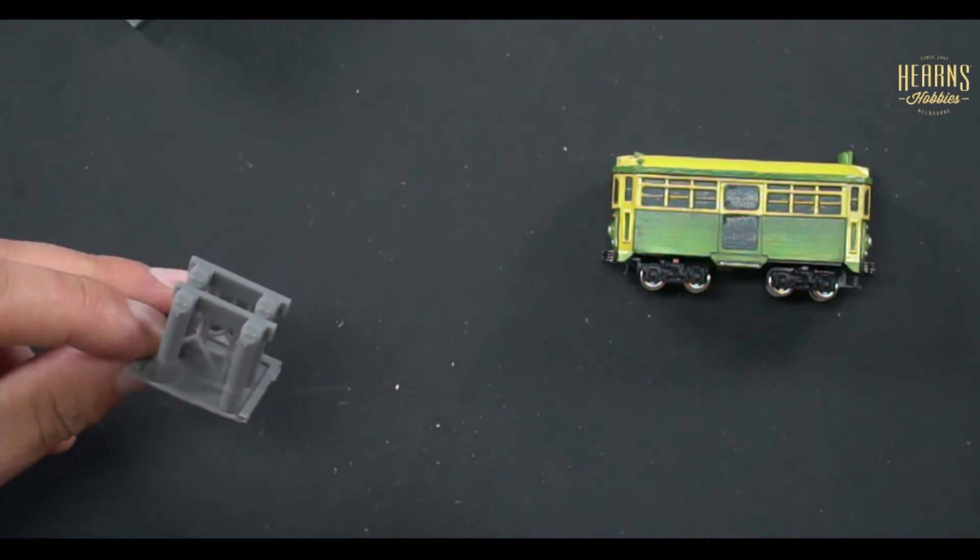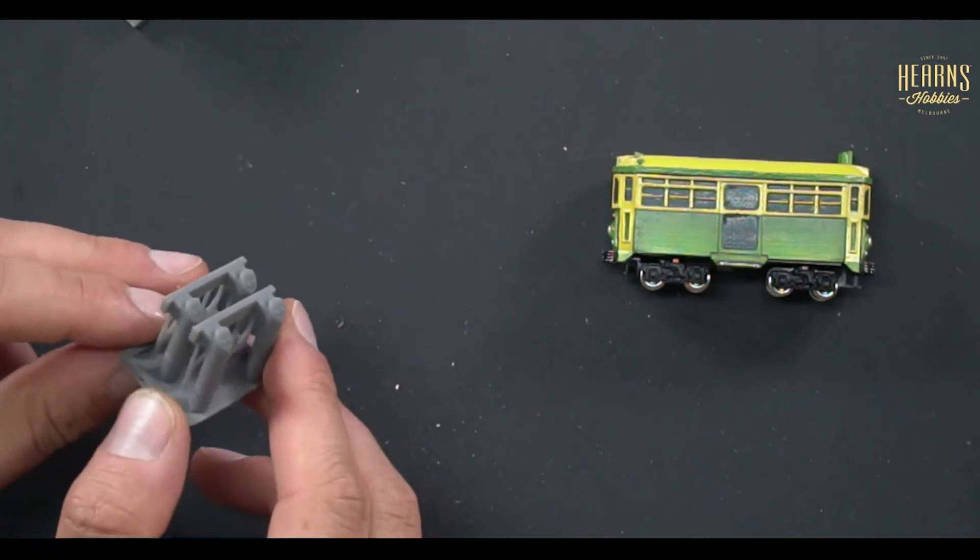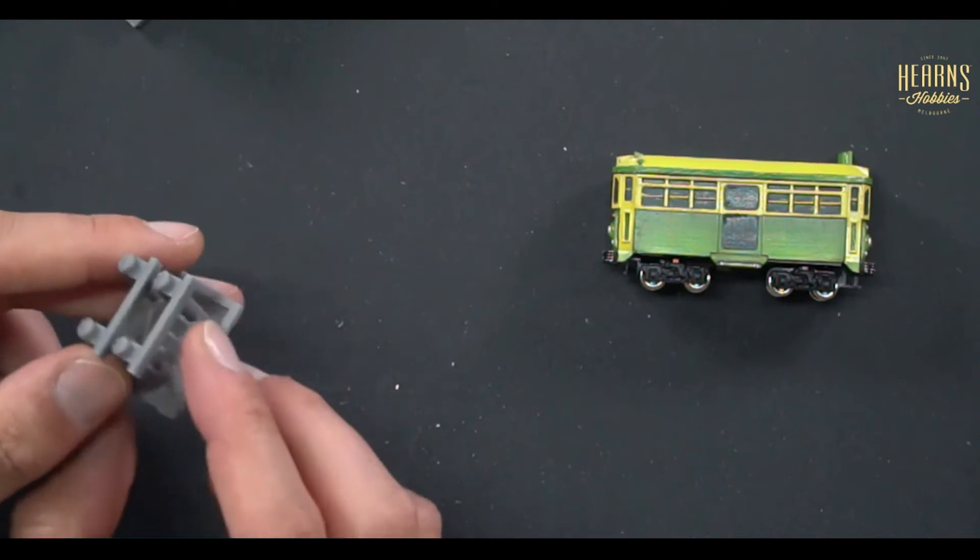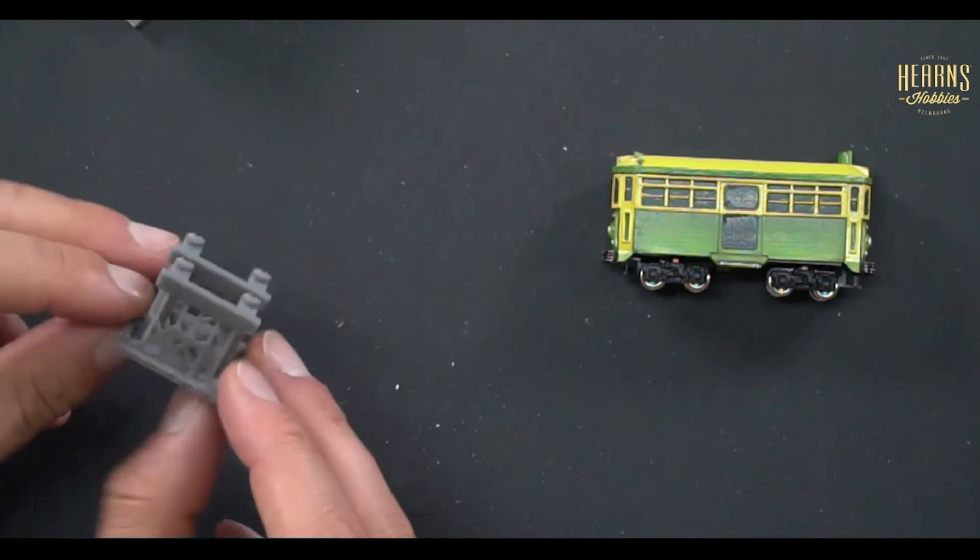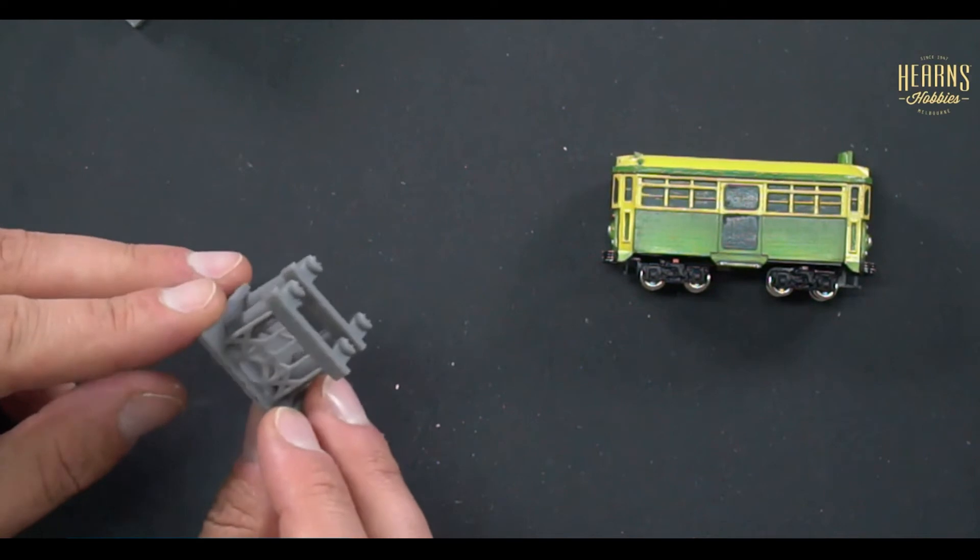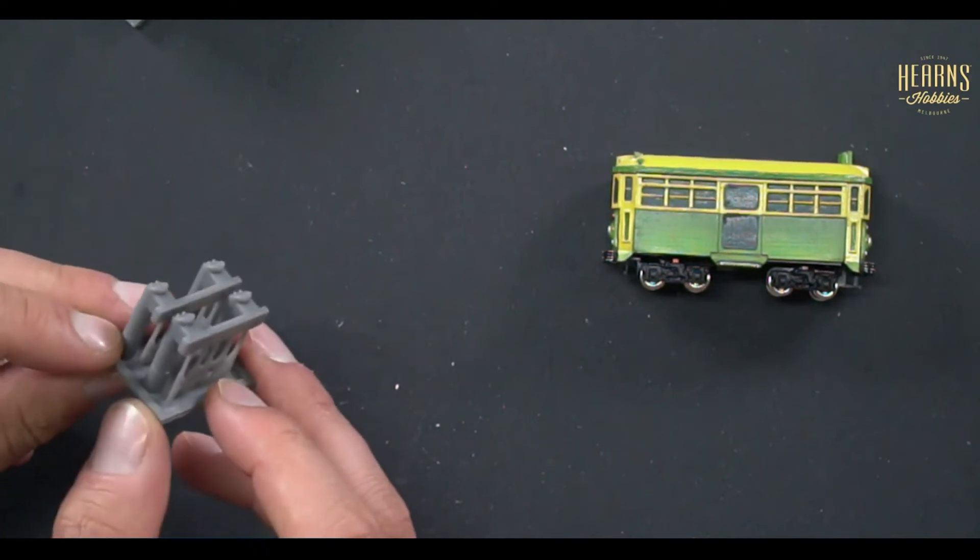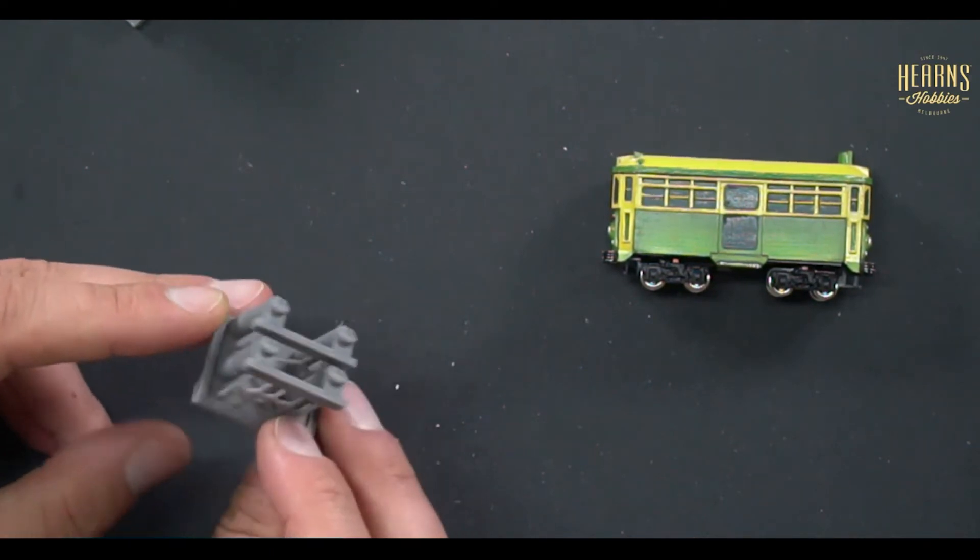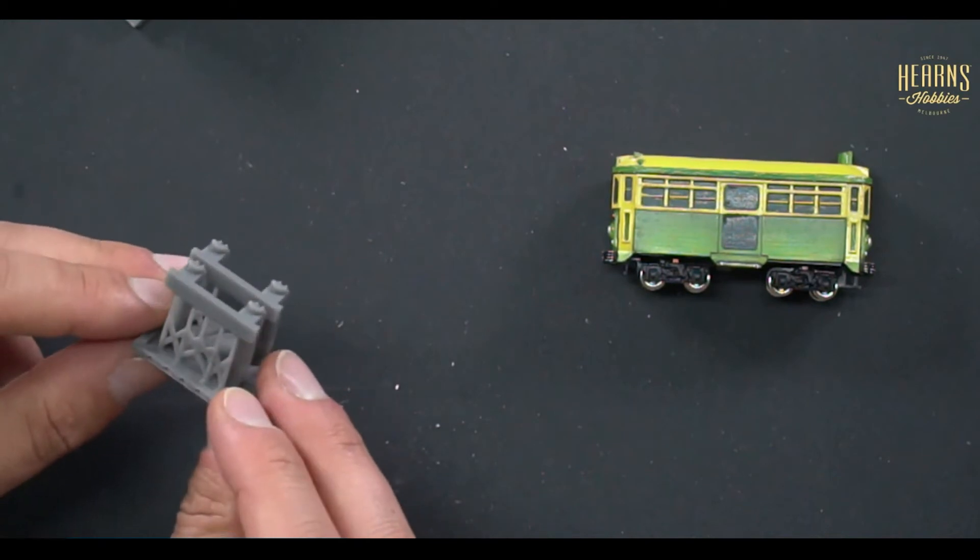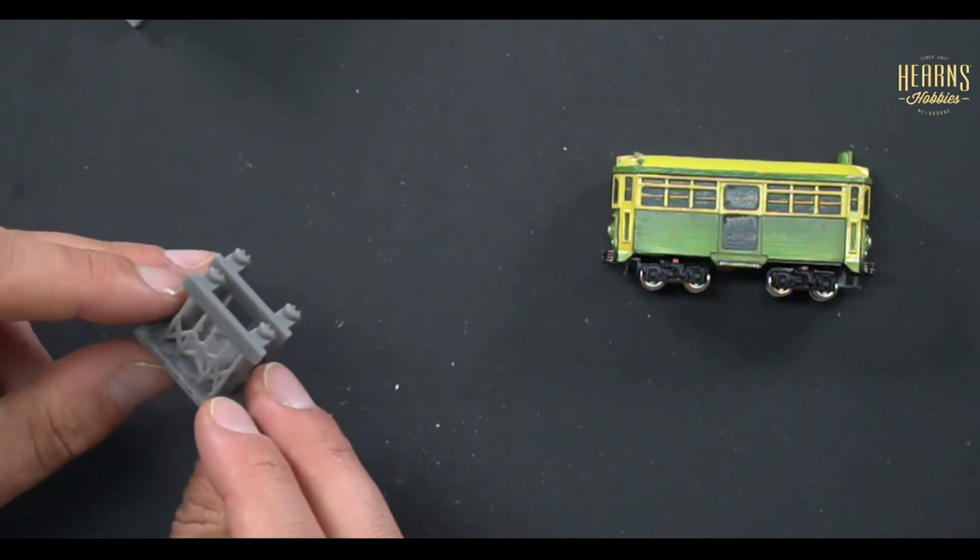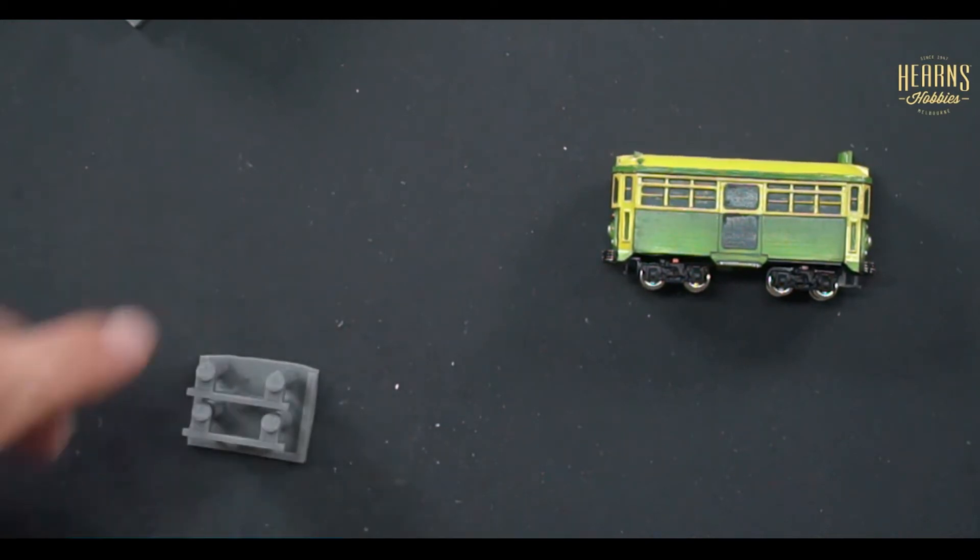That's a Victorian type buffer stop in HL scale. That's traditional Victorian. We worked on some original drawings of this buffer stop, and we have some photos and we've reproduced this one.